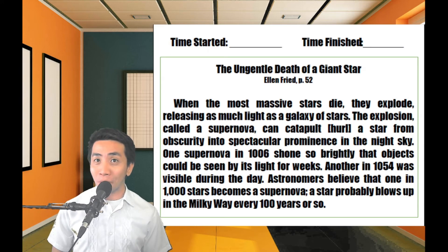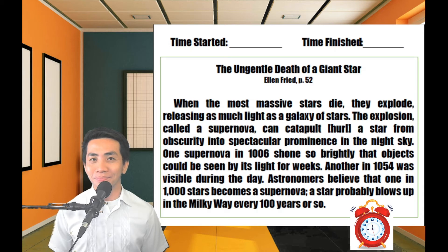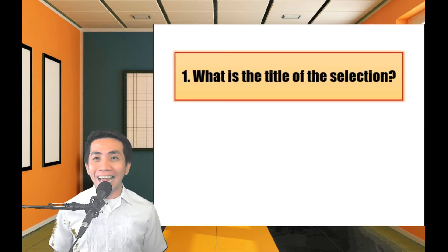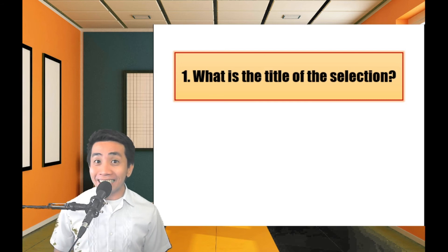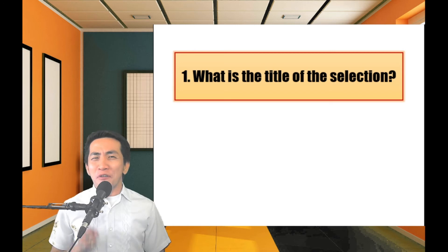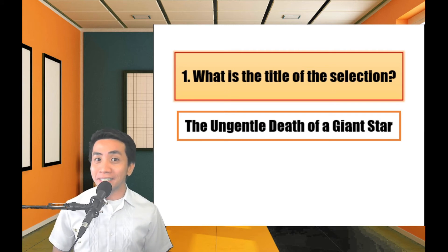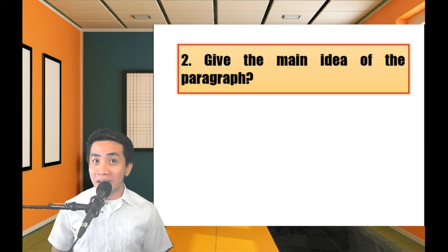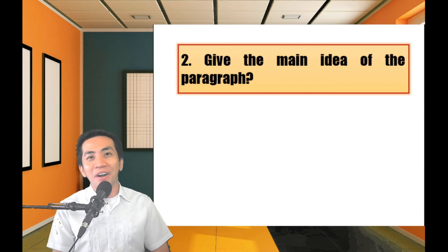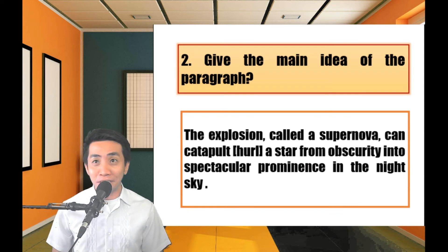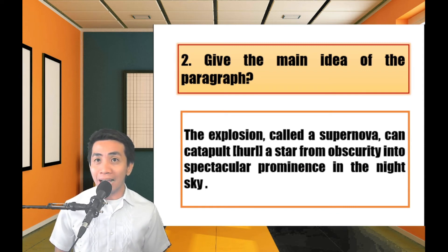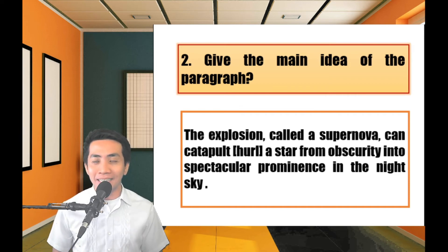Your 30 seconds start now. You're 30 seconds up. Let's answer the questions. What is the title of the selection? The answer is 'The Agenda of Death of a Giant Star.' Now let's proceed to the second question: give the main idea of the paragraph. The answer is in sentence number two: 'The explosion called a supernova can catapult a star from obscurity into spectacular prominence in the night sky.'